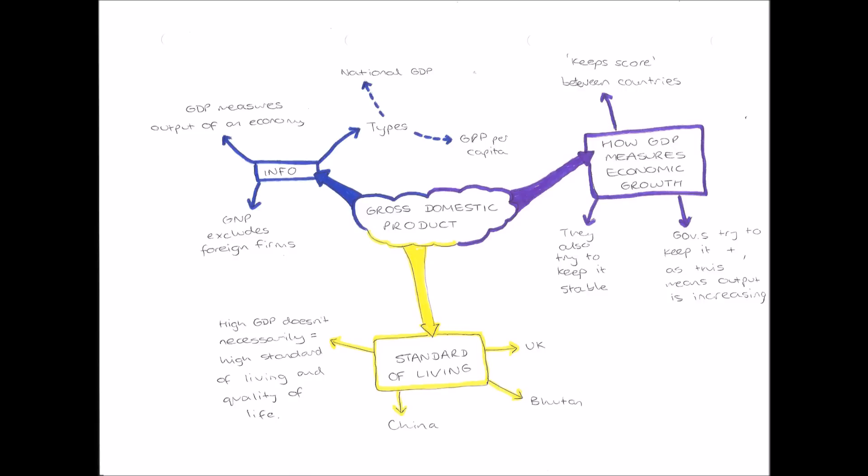And GDP can measure two types of output. We can have national GDP which measures the output of the whole economy, or GDP per capita or per person. So this measures the output per individual of the population.